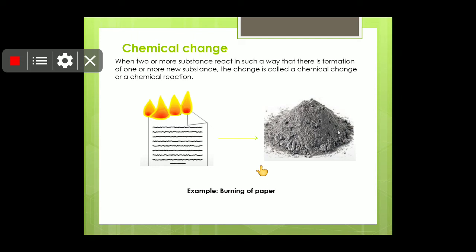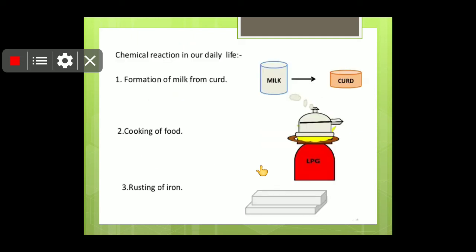So now we are at the point where we will see some examples of the chemical changes. So here you can see that when the paper is burnt, it will be converted into ash. And once it is converted into ash, we cannot get it back as paper again. So when two or more substances react in such a way that there is a formation of one or more new substances, that change is called a chemical change or chemical reaction.